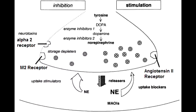What stimulates the release of catecholamines into the synaptic cleft? Amphetamines stimulate the release of catecholamines into the synaptic cleft. What drugs inhibit the reuptake of catecholamines into the presynaptic neurons? The drugs that inhibit the reuptake of catecholamines into the presynaptic neurons are cocaine, TCAs, and amphetamines.